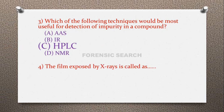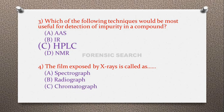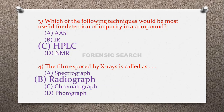Question 4: The film exposed by X-rays is called — option A: spectrograph, option B: radiograph, option C: chromatograph, option D: photograph. The correct answer is option B — radiograph. A spectrograph is the graph obtained in spectroscopy, chromatograph relates to chromatography, and photograph is from a simple camera. The film exposed by X-rays is called a radiograph.